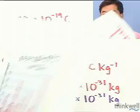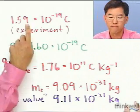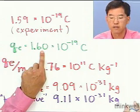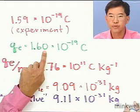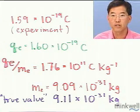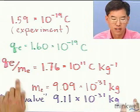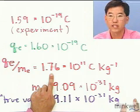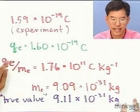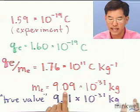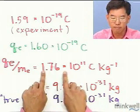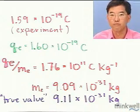The number that Millikan got was 1.59 × 10⁻¹⁹ coulombs, and the currently accepted value is 1.60 × 10⁻¹⁹ coulombs — to three significant figures. In fact, it's known to probably something like eight or nine significant figures. As you might imagine, this quantity is a very fundamental quantity: what is the charge on a single electron? Going back to Thomson, his value of charge-to-mass ratio is 1.76 × 10¹¹ coulombs per kilogram. Both the charge and the charge-to-mass ratio are known to six or seven significant figures.